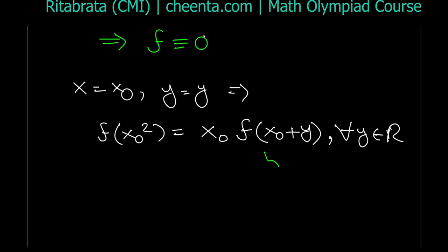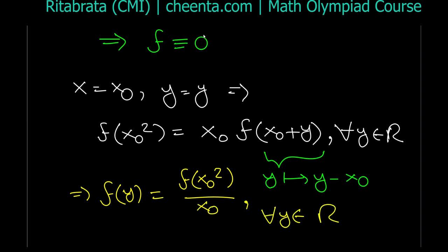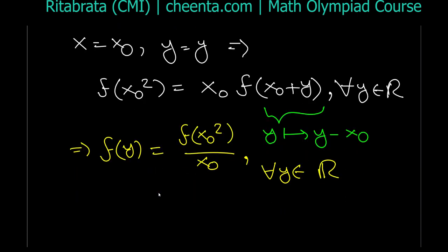We can divide by x₀ and replace y by y − x₀. In that case we get f(y) = f(x₀²)/x₀ for all real y. Since x₀ and f(x₀) are both fixed, f(x₀²)/x₀ is a constant c. That means f is a constant function.